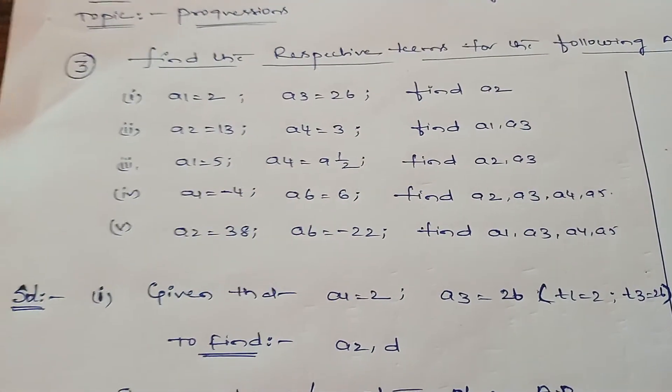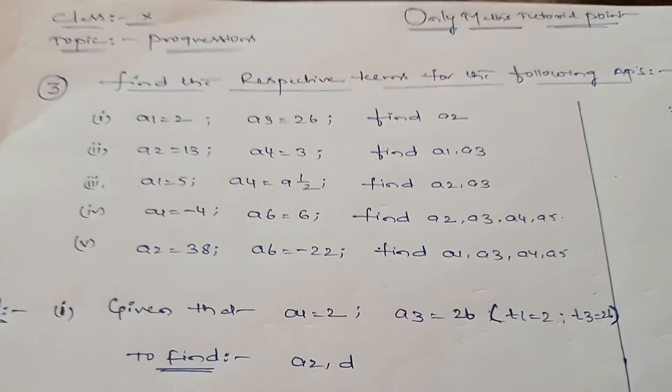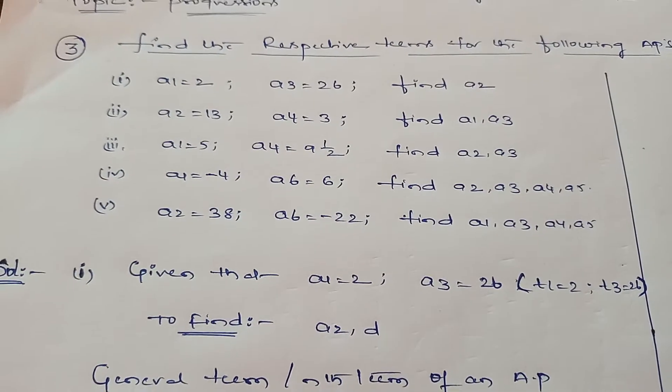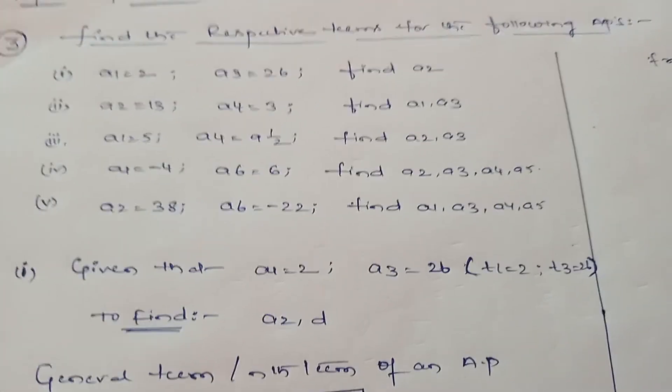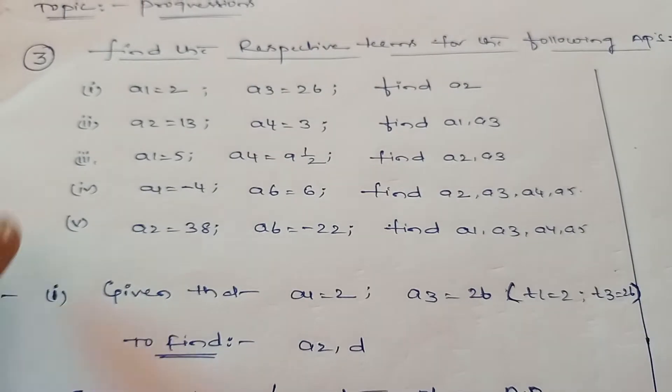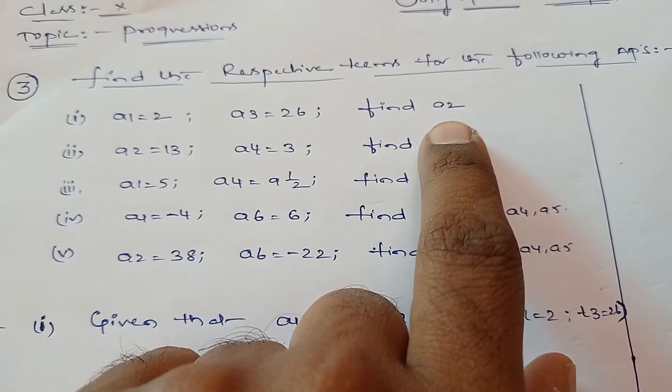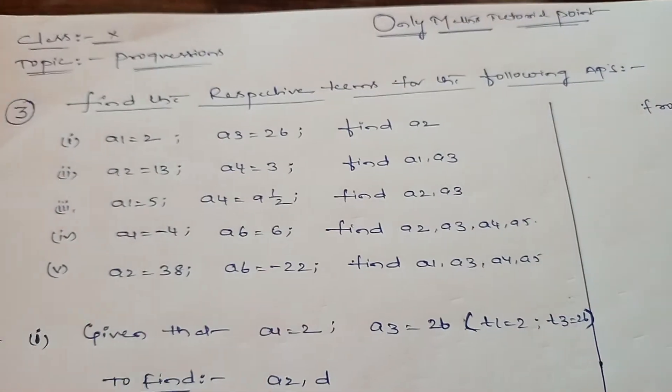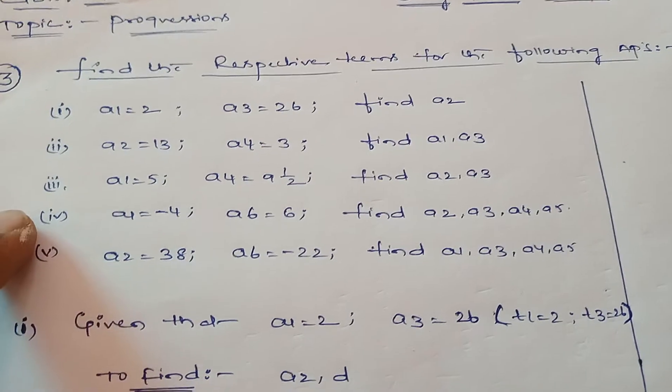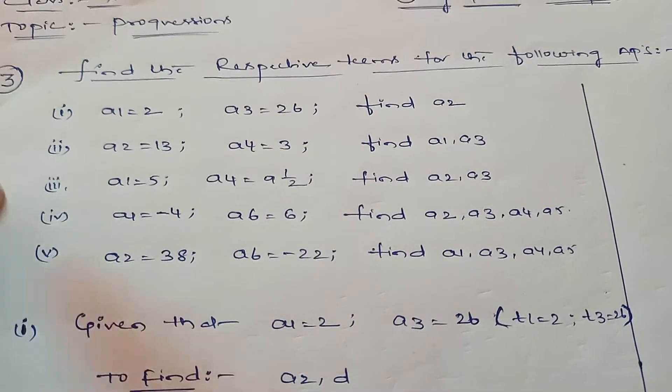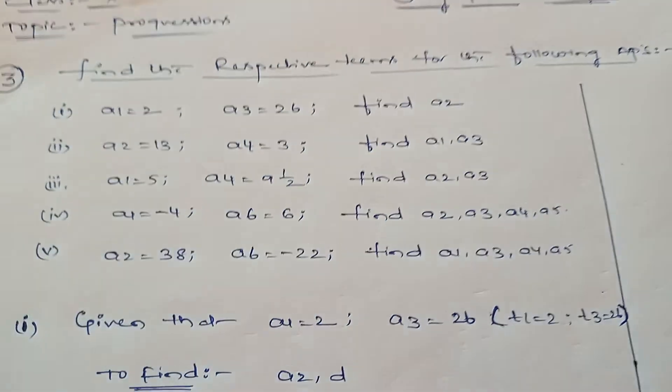As I said in the previous video, if we know the first term and the common difference d value, then you can find any value in the given series. But in this they are asking to find a2, the second term, and for our opinion we need to find the common difference d also. If you know the d value, then only you can find the second term.